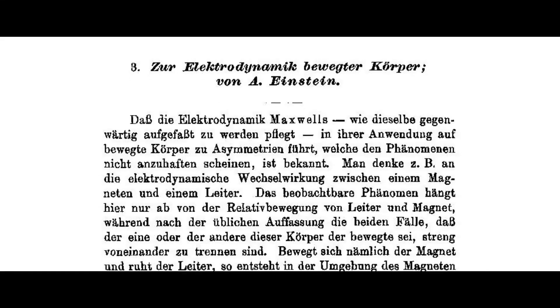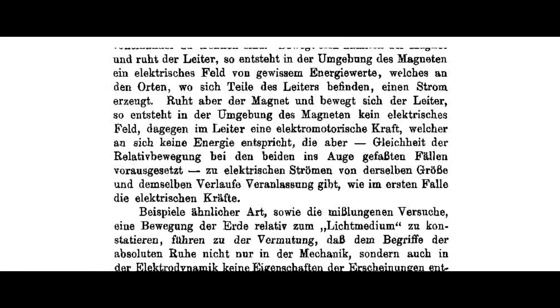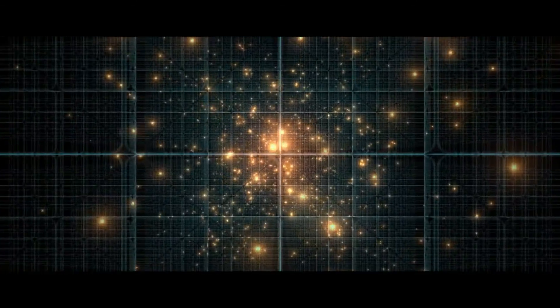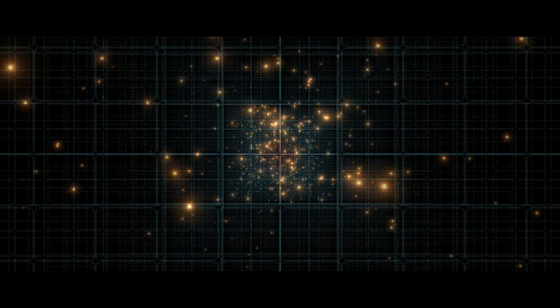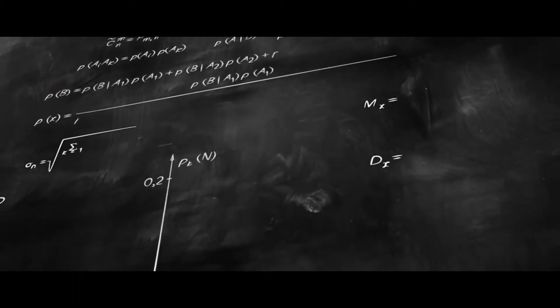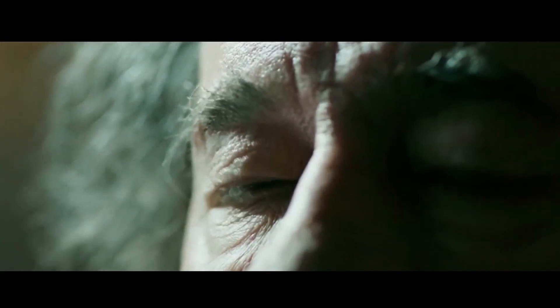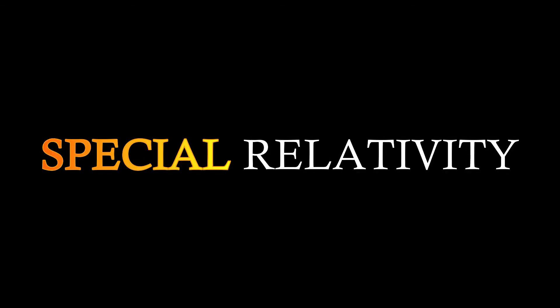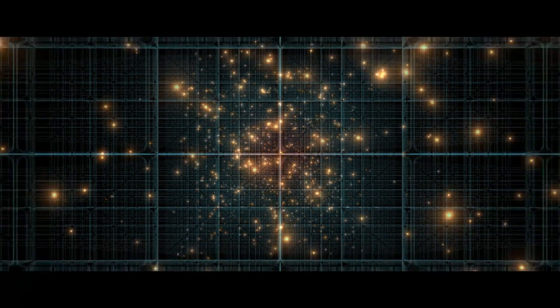Einstein said that absolute motion is a meaningless concept. He published his theory, Special Relativity, in the German physics journal Annalen der Physik in 1905. The Special Theory of Relativity is based on two postulates: (1) The principle of relativity — the laws of physics are the same in all inertial reference frames; they are absolute, universal, and the same for all inertial observers. (2) The principle of the constancy of the speed of light — the speed of light in free space has the same value in all inertial reference frames. The special theory of relativity is called 'special' because it is limited to the special case of inertial frames of reference.